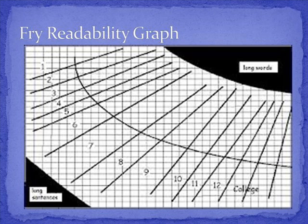Now use the Frey graph and determine the reading level. You can use the graph in your textbook or print off a clear copy from the internet. Pause the clip to find the reading level score. We had 141 syllables, so across the top and bottom are the syllable counts — we find where it says 141. 141 syllables is about here at the purple arrow. Now we use the sides and find 5.7 for our number of sentences. 5.7 sentences is where the yellow arrow is along the side. Follow the lines until they meet — you will see that they meet at the green arrow. It is just inside the 8th grade reading level.